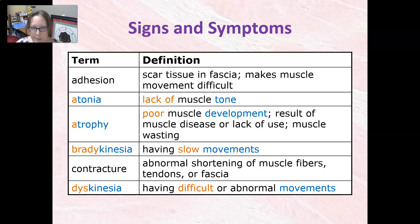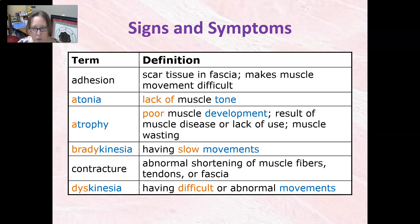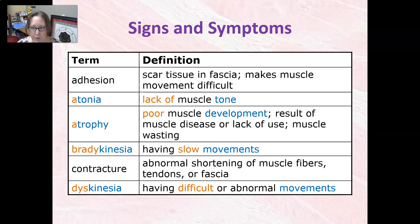Adhesion is scar tissue in the fascia. It makes muscle movement difficult and makes the person stiff. Atonia is a lack of muscle tone. Atrophy is poor muscle development, the result of muscle disease or lack of use — like if somebody's bed bound. It's also referred to as muscle wasting.